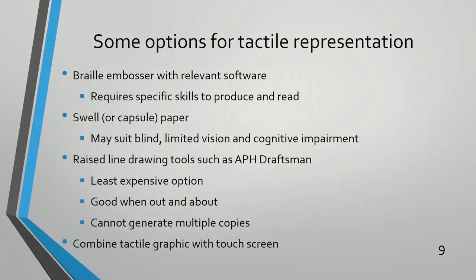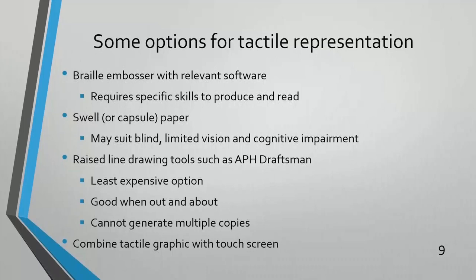Some options for producing tactile diagrams. Braille and Bossa with relevant software — that requires specific skills both to create and to read them. Swell or capsule paper, which is what I just showed you — that paper's been around for quite some time. You either photocopy or print the material onto the paper, put it through a machine that applies ultraviolet heat to it, and the black areas get raised up. It's a very nice option.